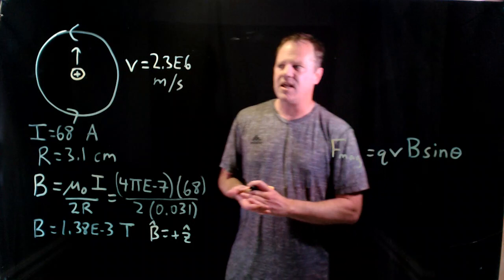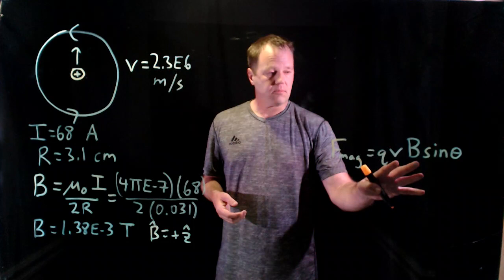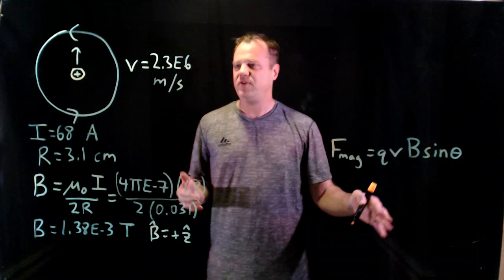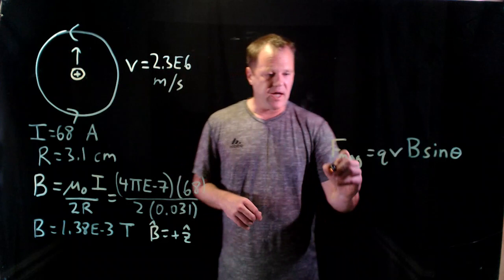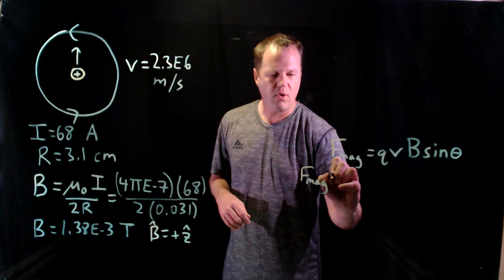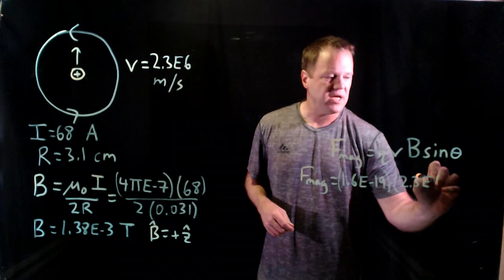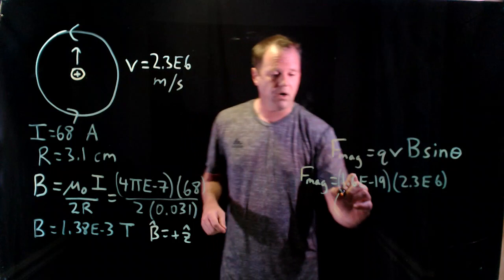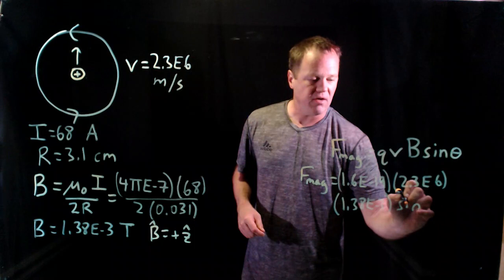Theta is the angle between the two vector quantities here. The velocity vector and the magnetic field. So don't drop off this term here. That's important. Let's go ahead and chuck in numbers into this formula. Magnetic force would be, you should know the charge of a proton, 1.6 times 10 to the minus 19. I gave you the speed, 2.3 times 10 to the 6. The magnetic field we calculated earlier, 1.38 times 10 to the minus 3. And then sine of what?